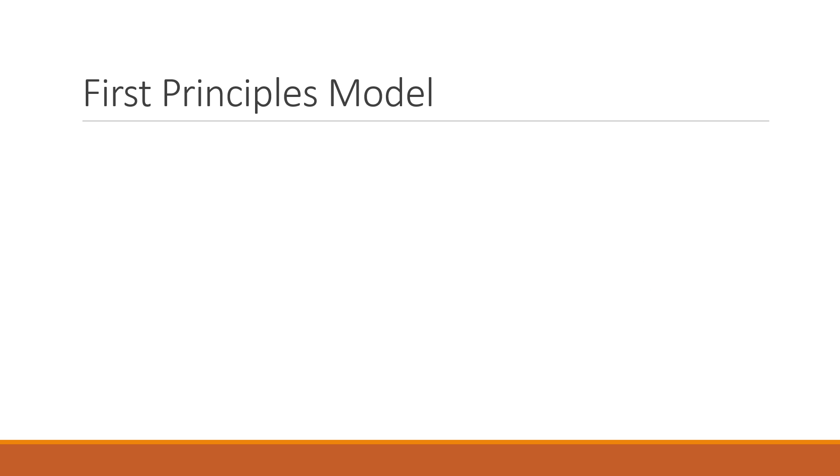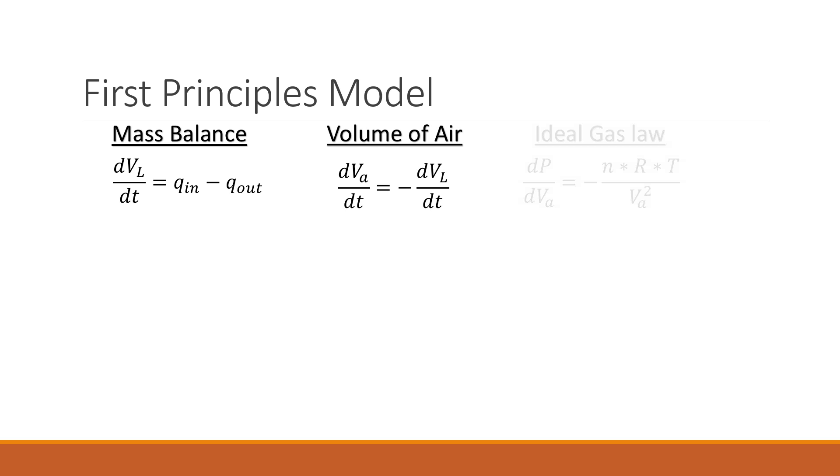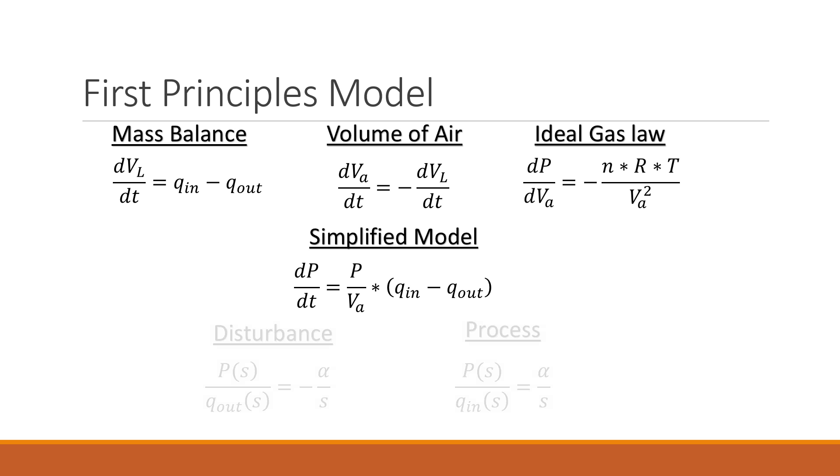In order to model this system, we took a first principles approach. We first looked at the flow into and out of that bubble trap, then wanted to relate the volume of the liquid to the volume of the air, and then relate the change in the volume of air to the change in pressure using the ideal gas law. We combined these three to create a simplified model that we then linearized and took into the Laplace domain to come up with these two transfer functions, one for the disturbance and one for the process. These turned out to be an integrating function, which is easier to control.